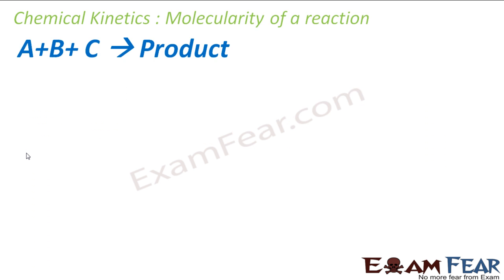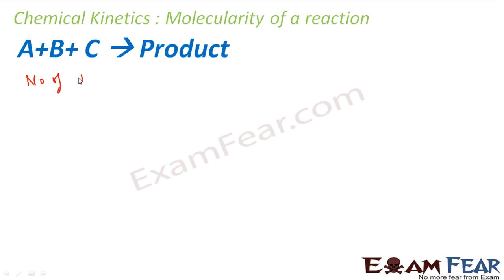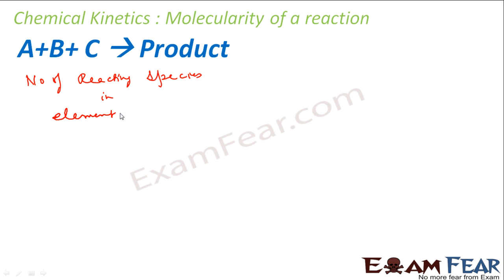To understand why X and Y in the rate law were not matching with the coefficients of the reactants, chemists came up with a very important concept: the molecularity of a reaction. It tells the number of reacting species taking part in an elementary reaction.